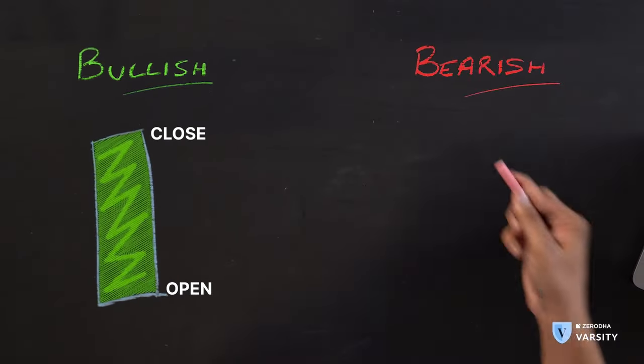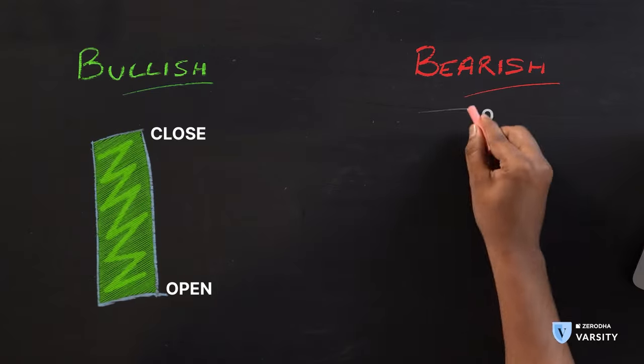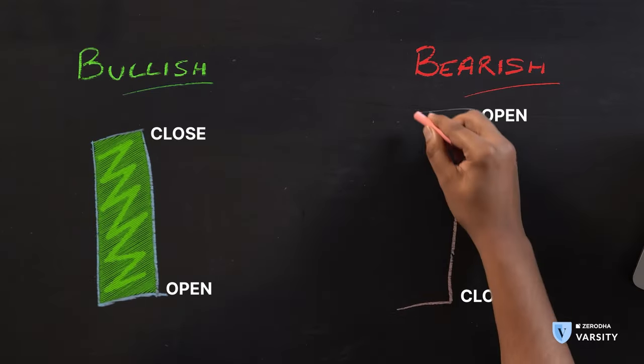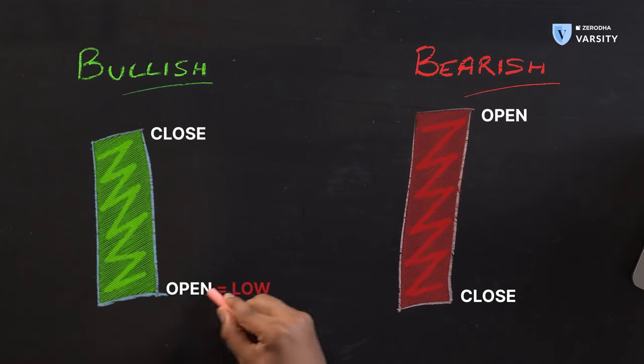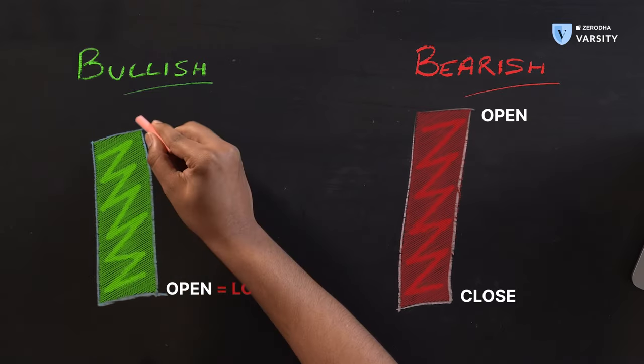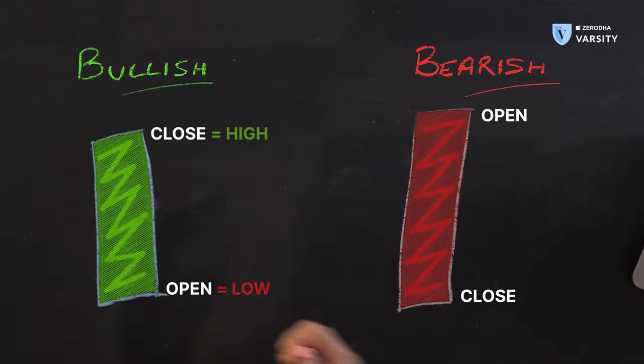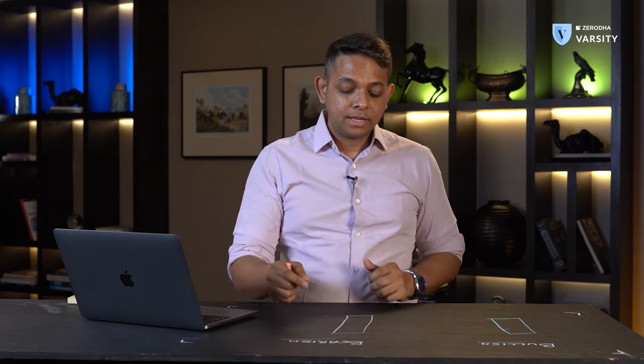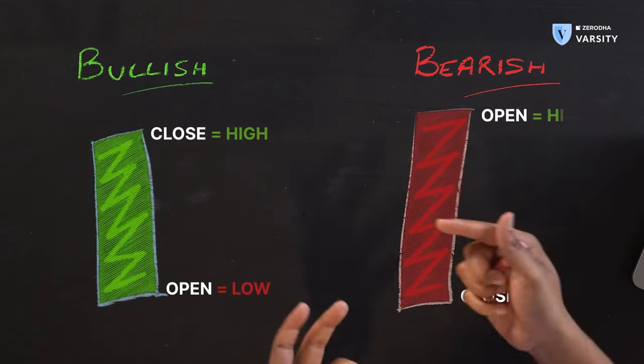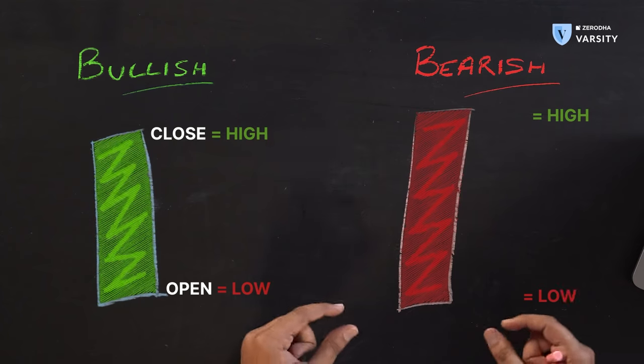A bearish Marobozu looks just like this. The textbook definition is that the open is equal to the low, and the close is equal to the high for a bullish Marobozu. For a bearish Marobozu, the open is equal to the high and the close is equal to the low.